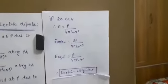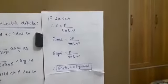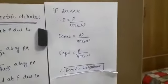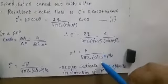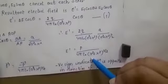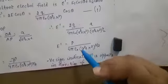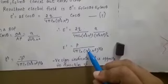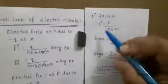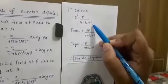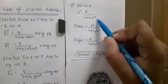Now the special case for the equatorial line: when the length of the electric dipole is very small compared to the distance of the point, meaning 2a is much less than r, then a² is very small and can be ignored. What remains is r² raised to the power 3/2, which gives r³. So the electric field E′ equals p upon 4πε₀r³. Electric field at the equatorial point is inversely proportional to r³.